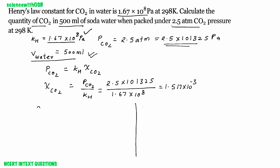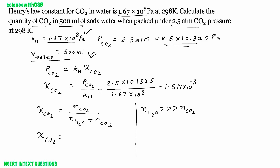Now, using the basic equation: mole fraction of a component equals number of moles of that component divided by total moles of all components. The components here are H2O and CO2. We apply a simplifying approximation: since the number of moles of solute (CO2) is very small compared to the solvent (H2O), we can ignore CO2 in the denominator. So mole fraction of CO2 ≈ moles of CO2 divided by moles of H2O. This step simplifies the calculation.